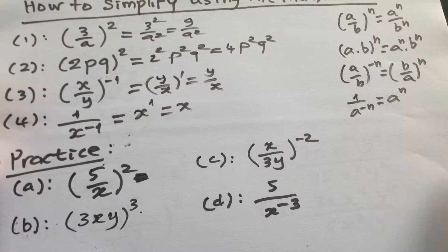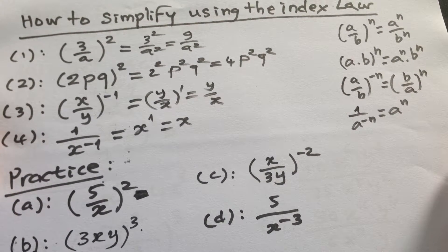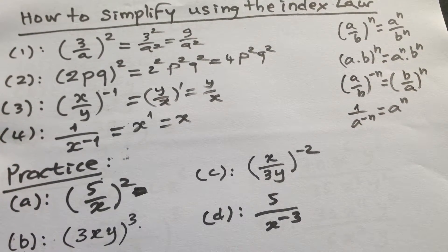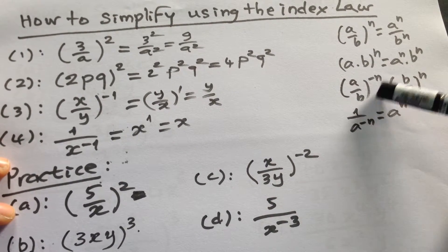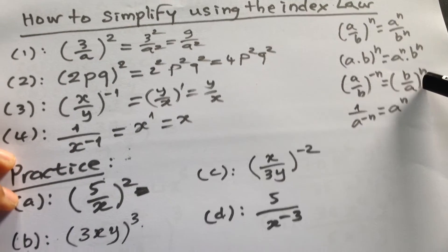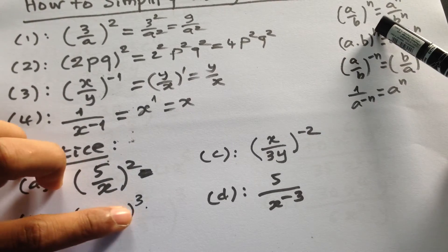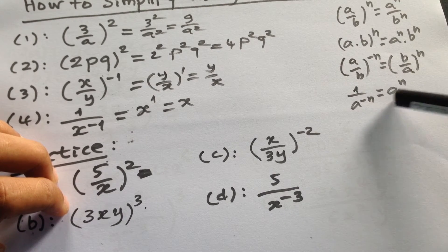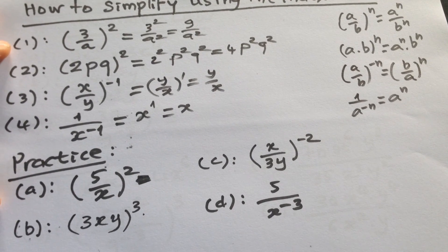By using the formula: for A, use the formula (a divided by b) to the power n. For C, use the formula (a divided by b) to the power minus n equals (b divided by a) to the power n. For B, use the formula (a times b) to the power n. And here, use the formula 1 divided by a to the power minus n equals a to the power n.